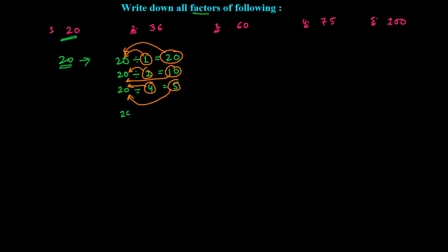You might be thinking we can do more. Like 20 can be divided by 5 giving 4 times, but 5 and 4 we have already mentioned here. We discussed in a good way how to write the factors of a given number.